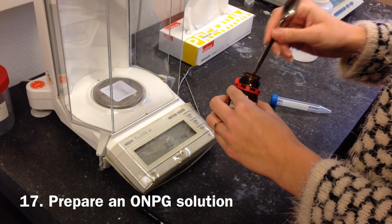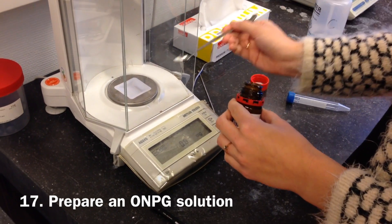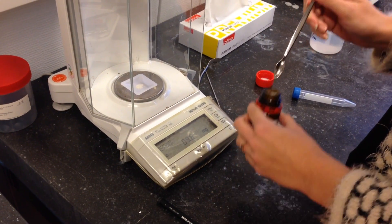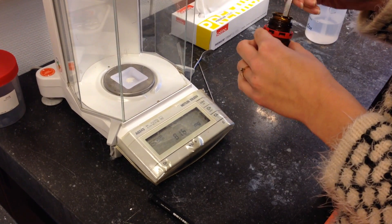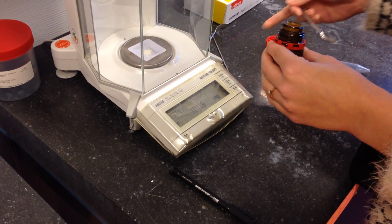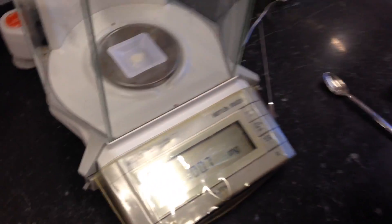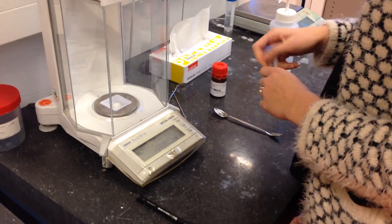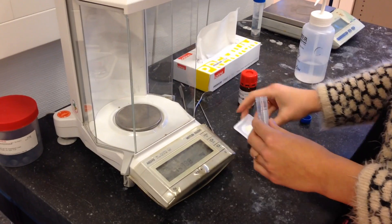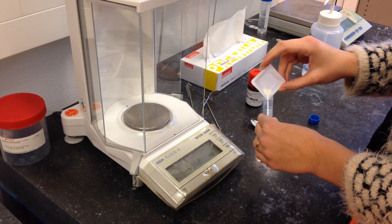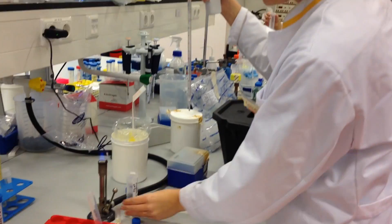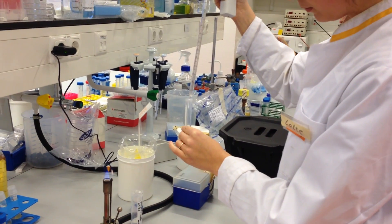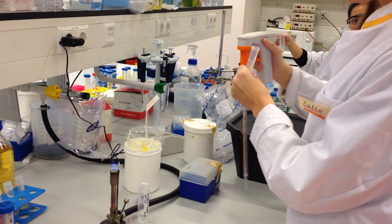You will need to prepare an ONPG staining solution. This can be done while incubating your sample on ice. Start by preparing its main component, a 10 mg per mL ONPG solution. Weigh ONPG on the scale and transfer this to a tube. Dissolve the ONPG in phosphate buffer. Store in the dark or cover with aluminum foil.